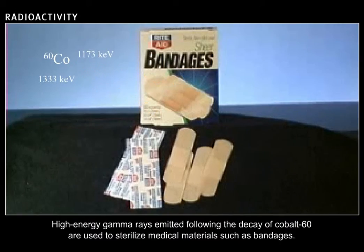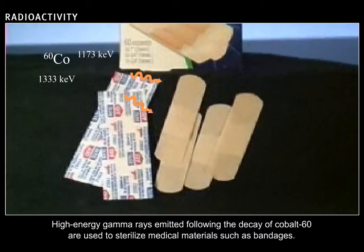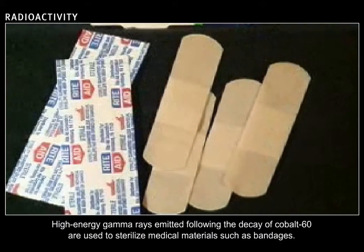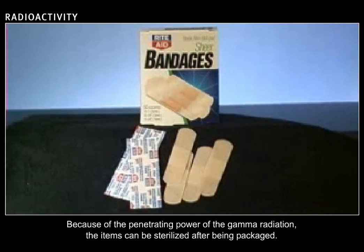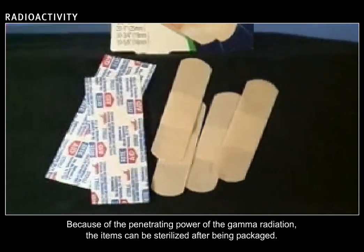High-energy gamma rays emitted following the decay of cobalt-60 are used to sterilize medical materials, such as bandages. Because of the penetrating power of the gamma radiation, the items can be sterilized after being packaged.